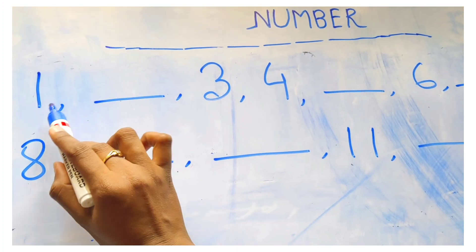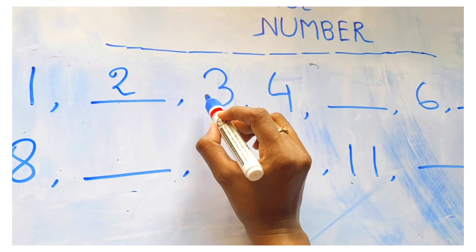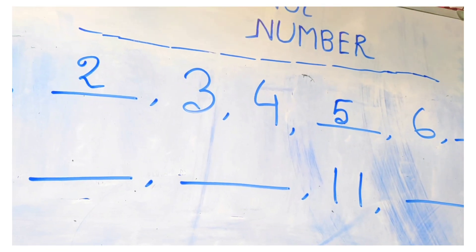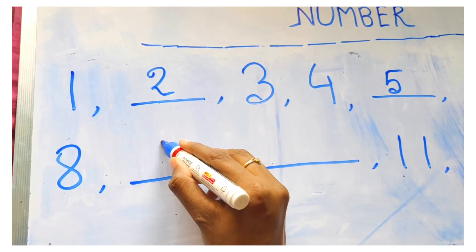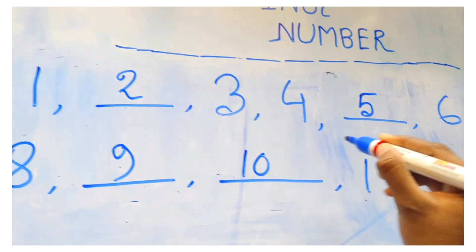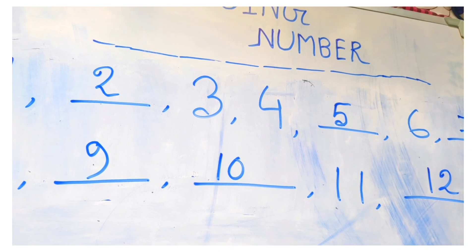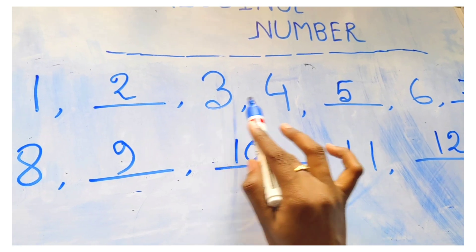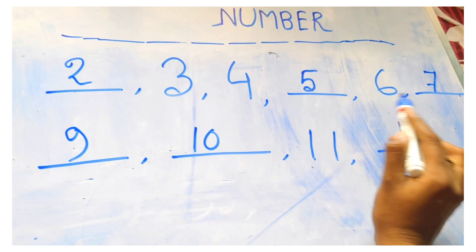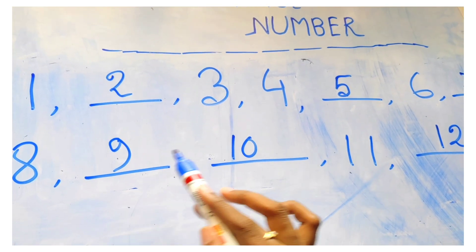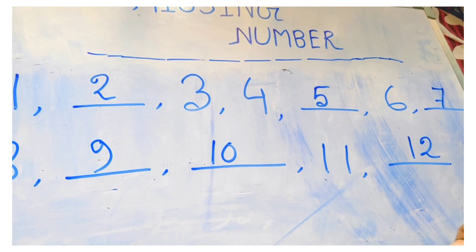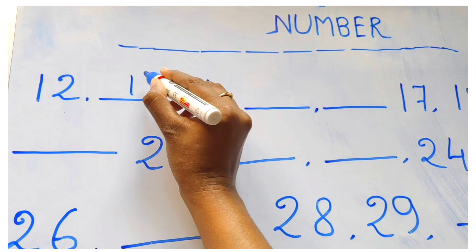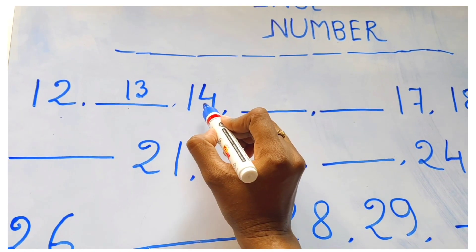First one, next two, three, four, next five, six, seven, eight, nine, ten, eleven, twelve. So, repeat once more. One, two, three, four, five, six, seven, eight, nine, ten, eleven, twelve. Twelve, then thirteen. Very good. Then fourteen.